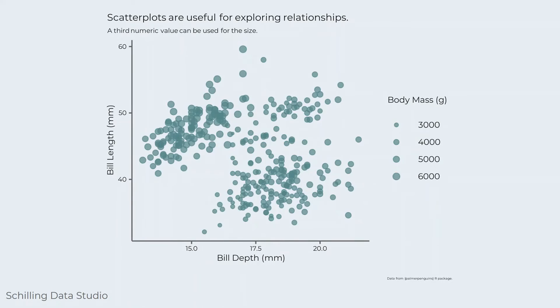You can also add a third numeric value to a scatterplot by changing the size of the points. Body mass has been added to see if there is a relationship between bill depth, bill length, and body mass among the penguins.